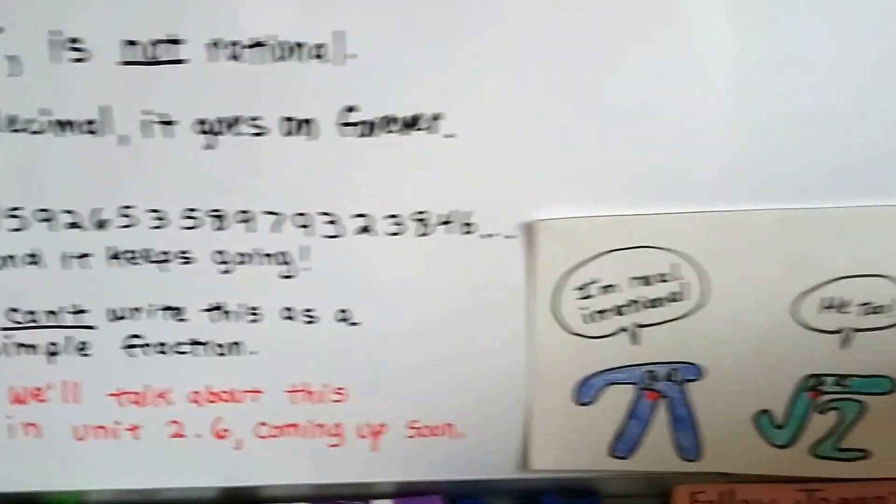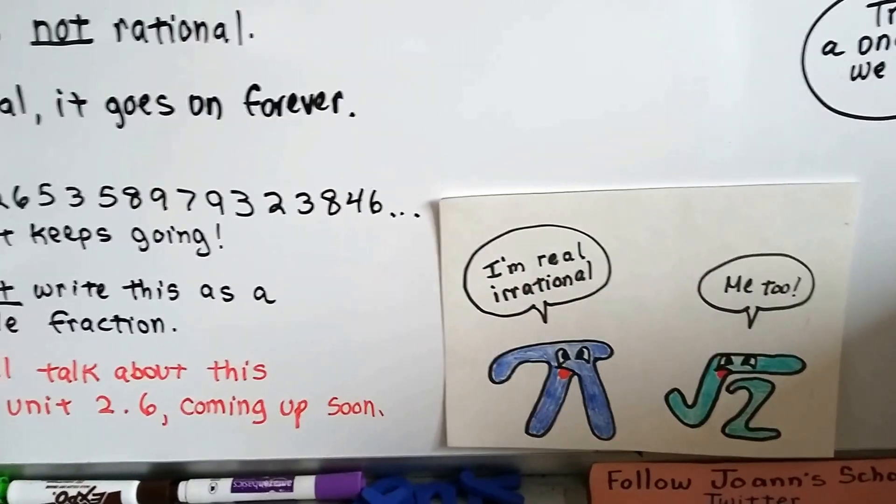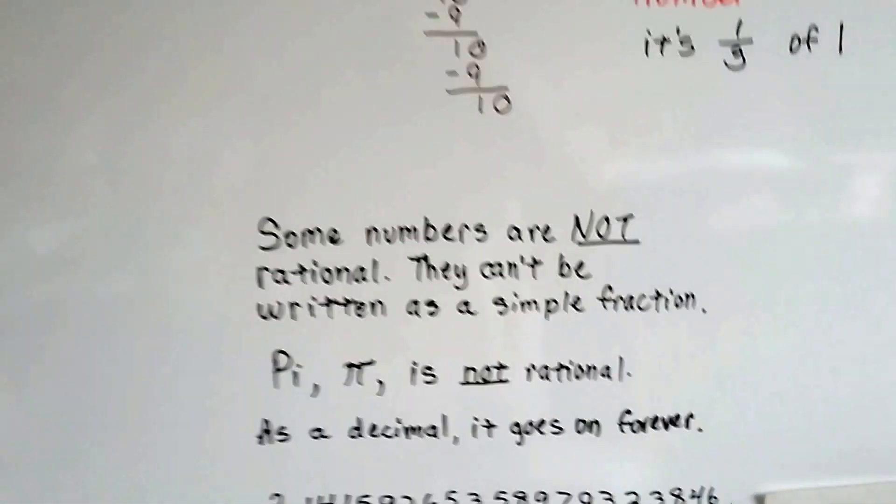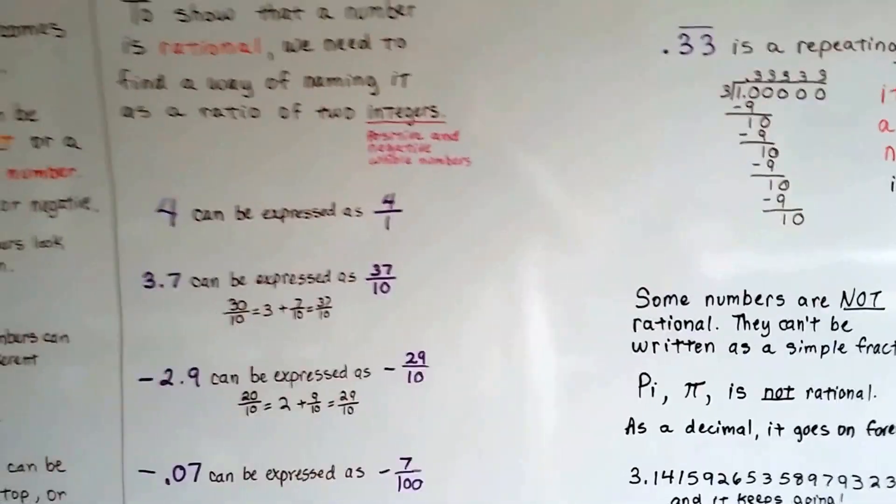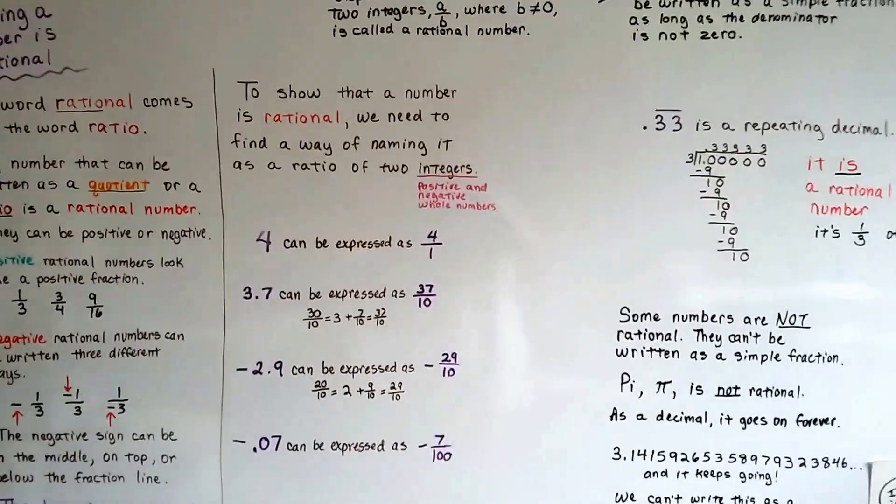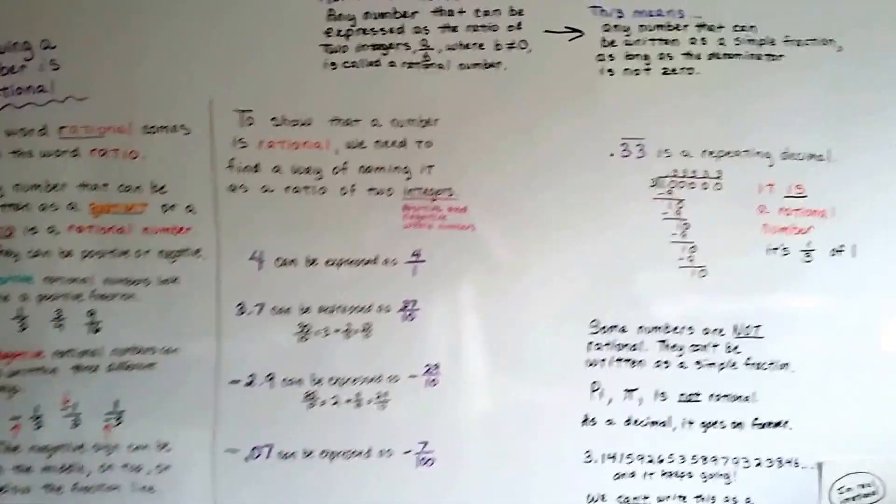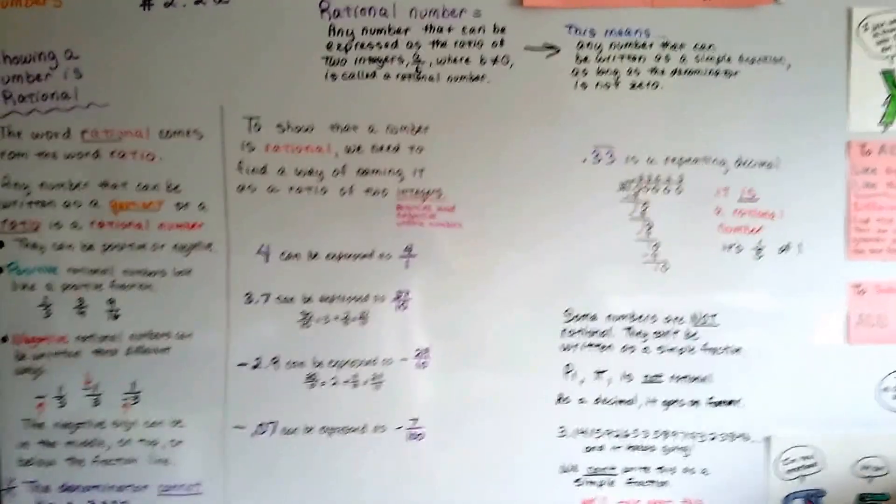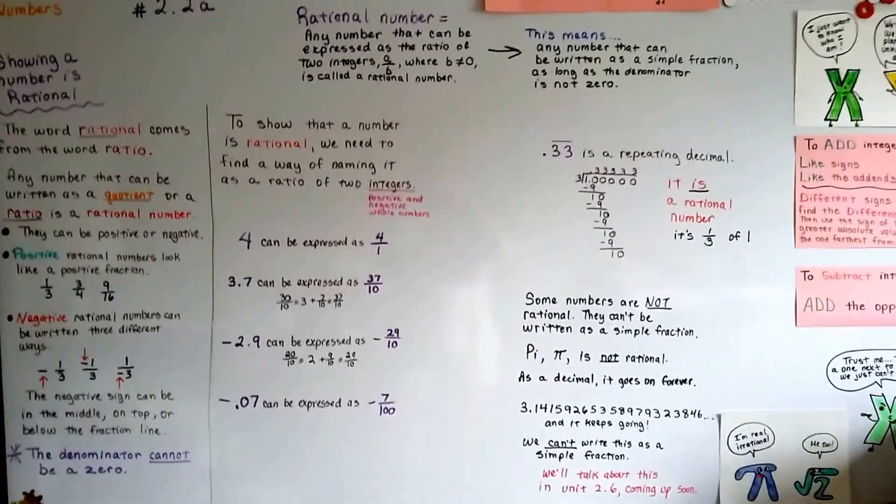So just remember, there are some numbers that are not rational. They're actually called irrational, and we'll talk about that coming up. So those are showing a number is rational. And we're going to continue on to 2.2b. We're going to talk about defining rational numbers. I'll see you there. Bye.